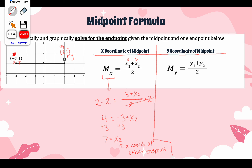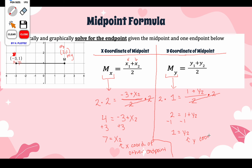Now we do the same thing for our y-coordinate. We have our y-coordinate of our midpoint: 1 = (y1 + y2) / 2, where y1 is 1, but we don't have y2. Multiplying both sides by 2 to clear the fraction gives us 2 = 1 + y2. Subtracting 1 on both sides gives us y2 = 1. This is the y-coordinate of the other endpoint.